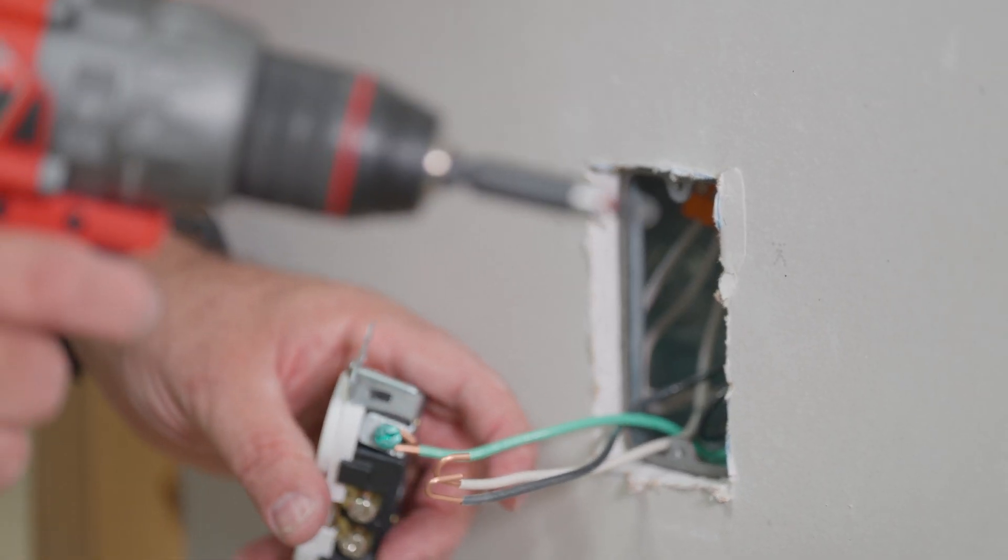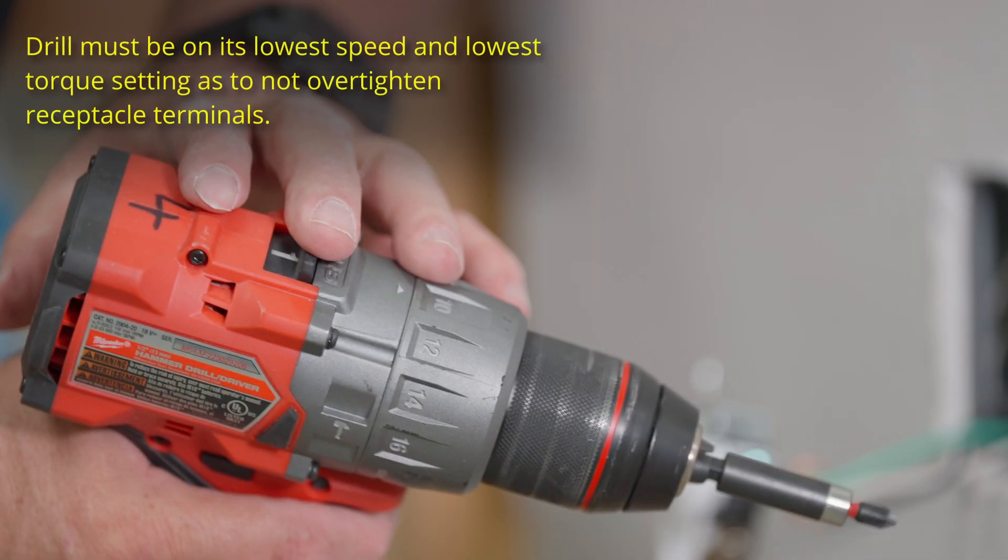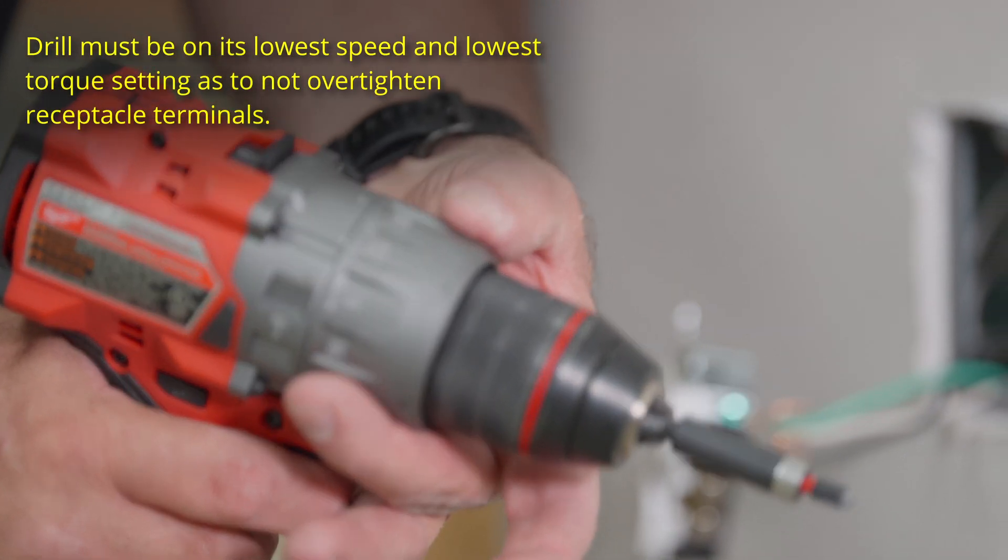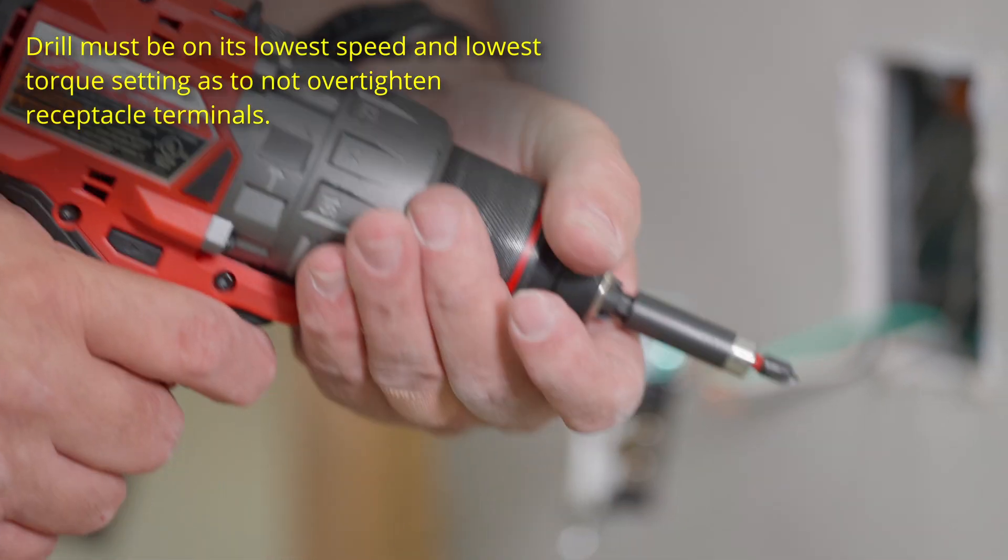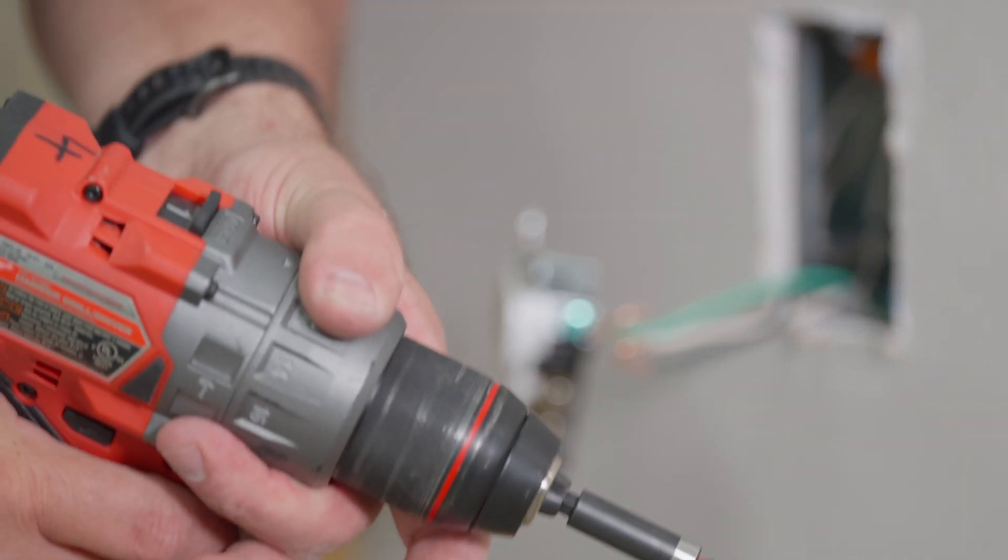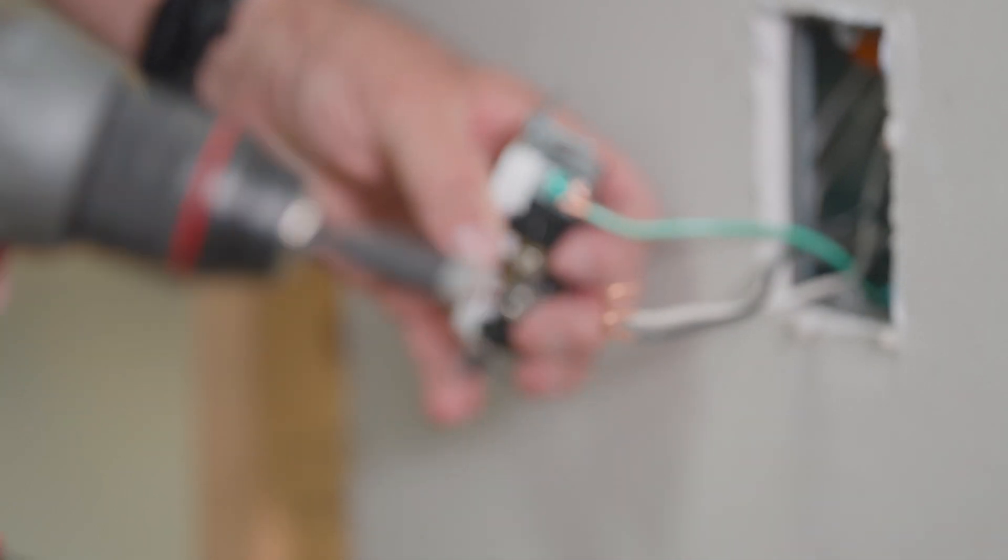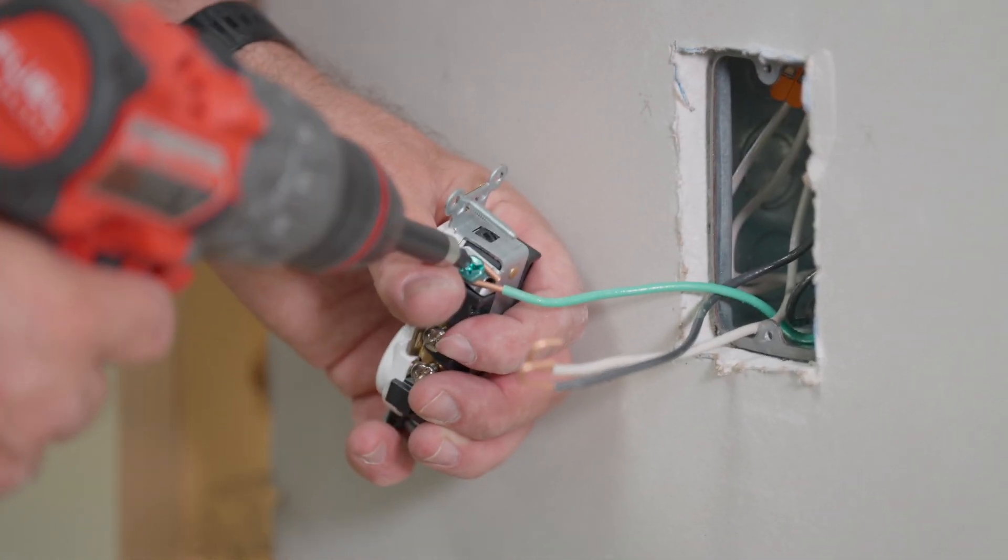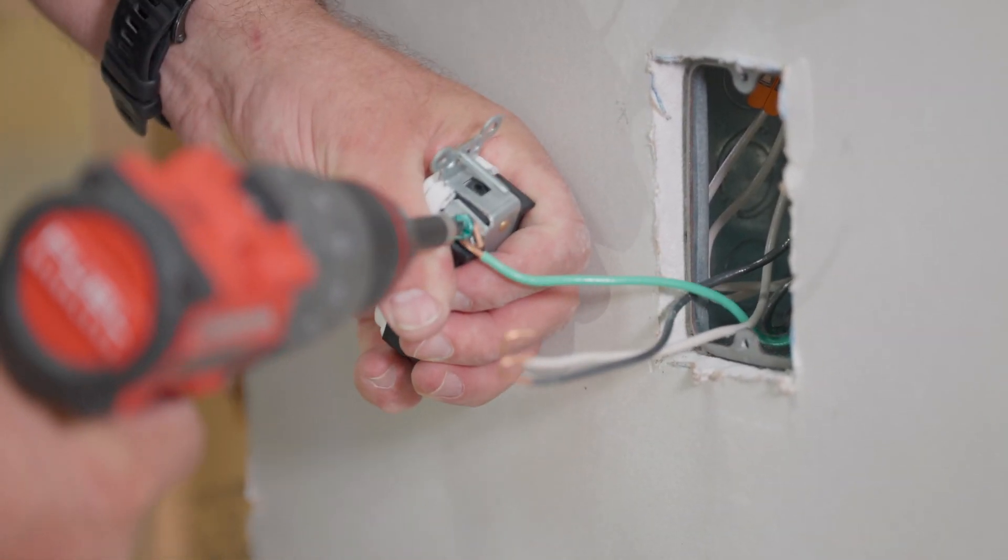Now make sure when you tighten it on, you put it only on setting one, the slow setting, and also adjust so you won't overtighten so it won't rip the screw off. You want to make sure that you don't have it on drill mode and ruin the receptacle. So be careful and tighten it on there.